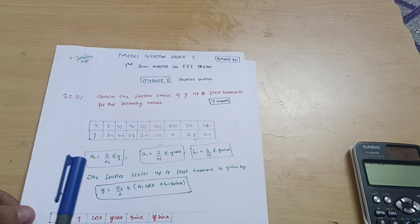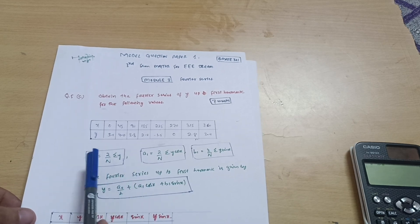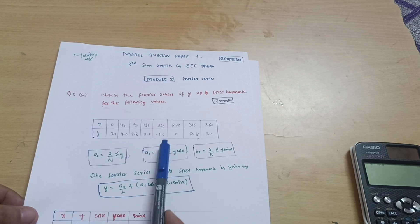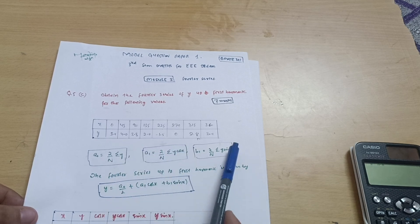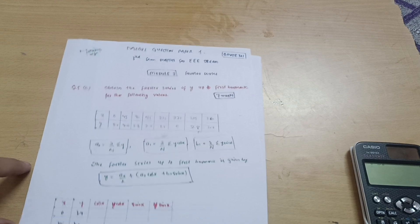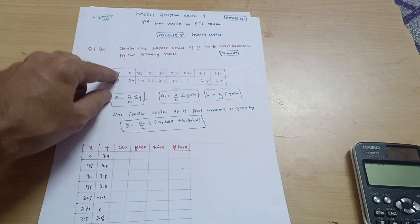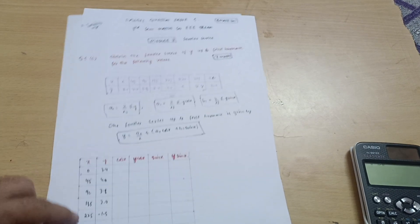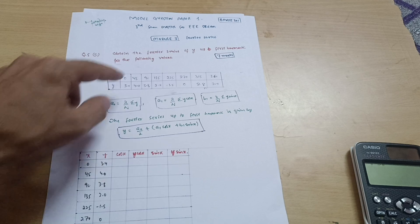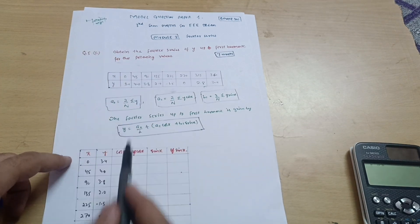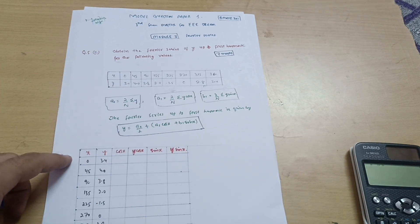In this problem, we need to calculate: summation of y, summation of y·cos(x), and summation of y·sin(x). Draw a table and write down the values of x and y as given. The x values and y values are listed; now calculate summation of y by adding those values.